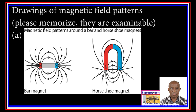Lines of force do not cross each other. Four, magnetic field is strongest at the pole, where lines are close to each other.